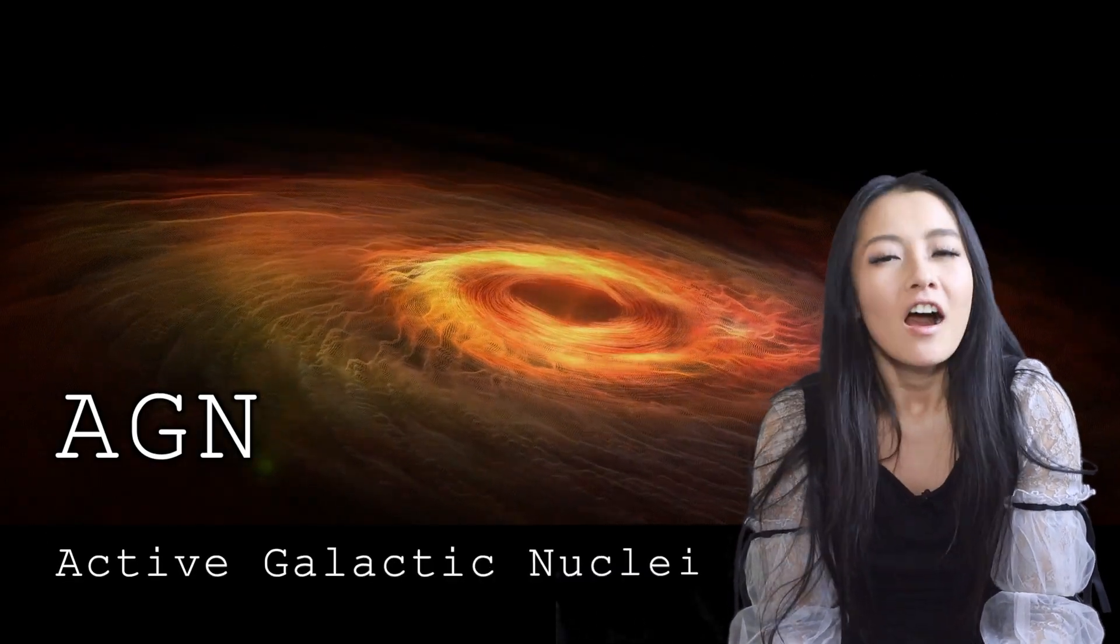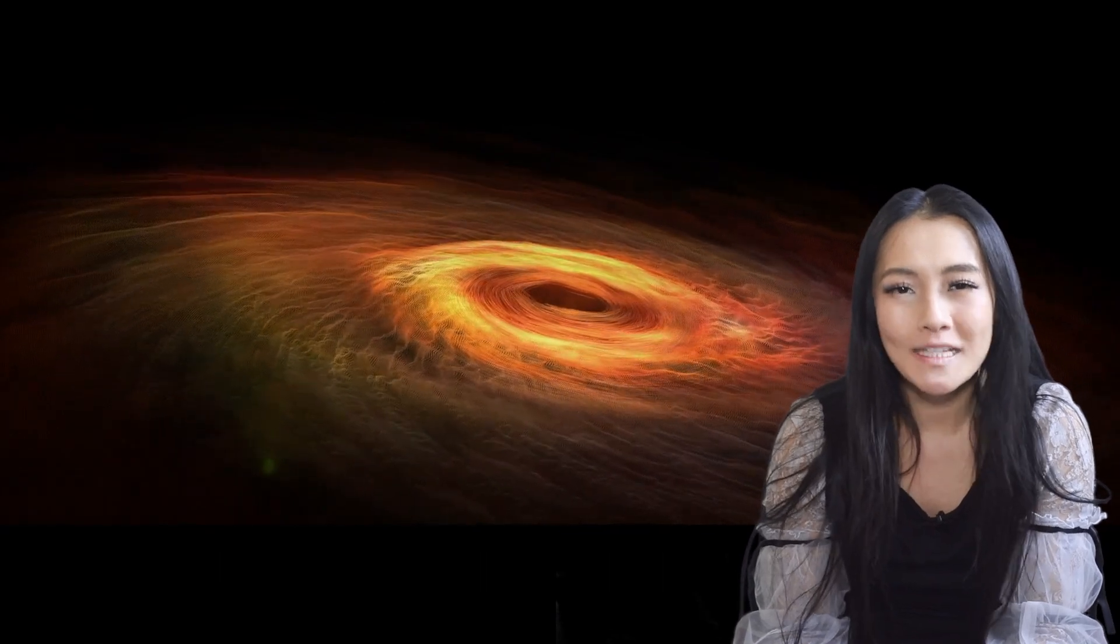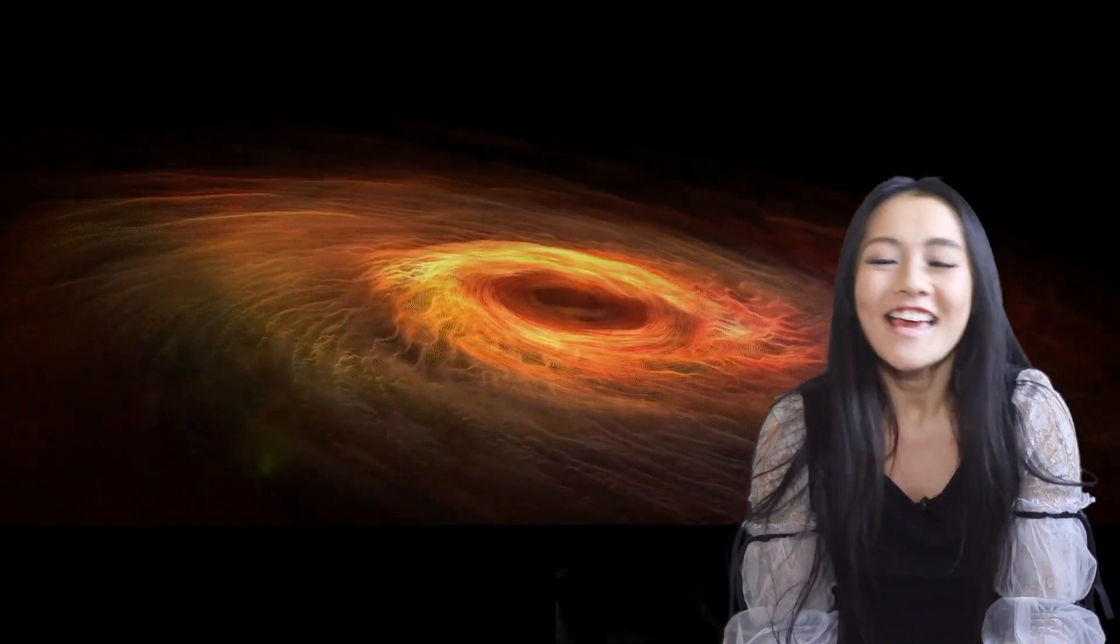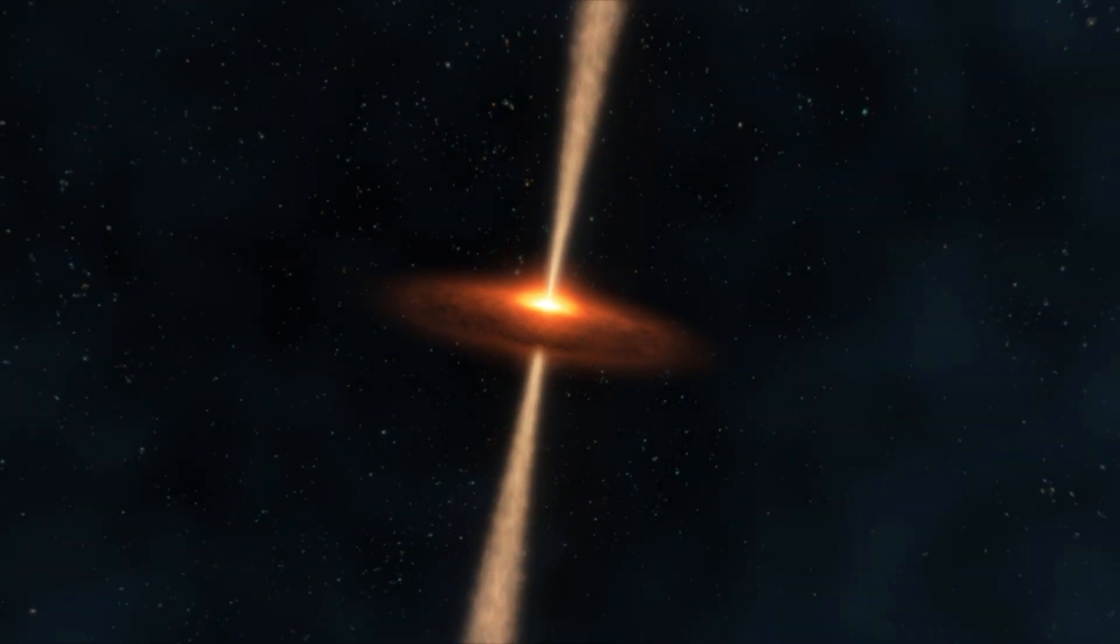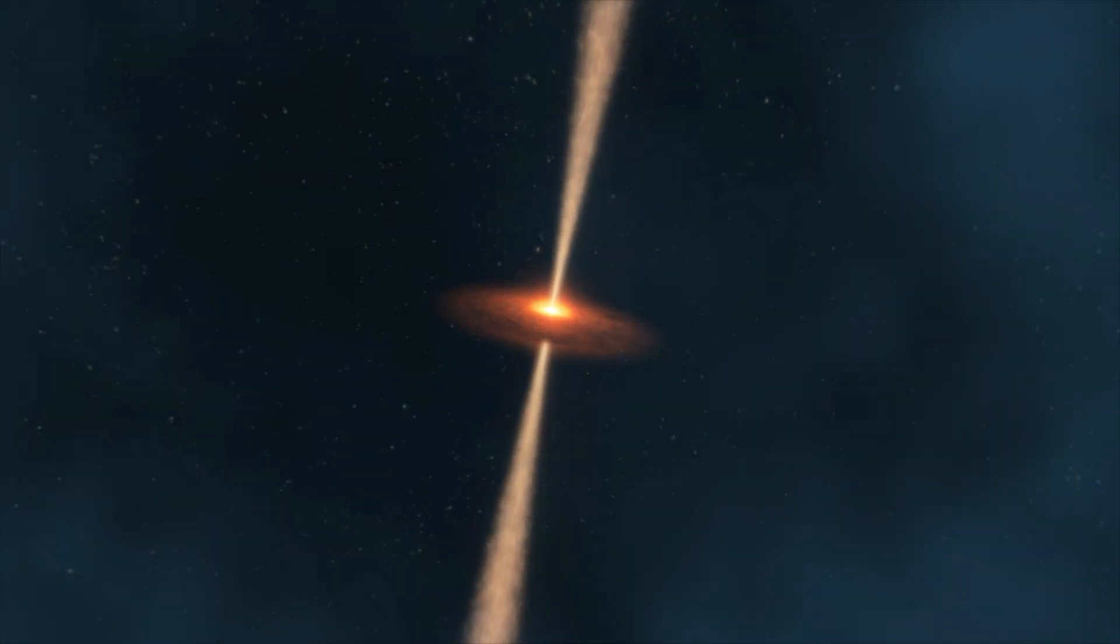AGN, or Active Galactic Nuclei, are active supermassive black holes at the centre of galaxies. These black holes can be millions or even billion times the mass of our sun. They feed off gas and dust material that orbit it in form of an accretion disc. And this drives the huge jets and winds that give them their name, active galactic nuclei.